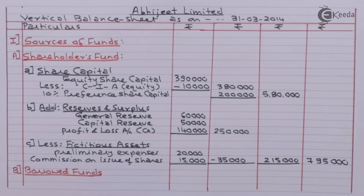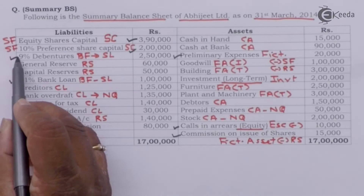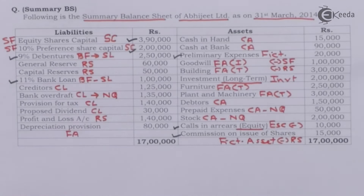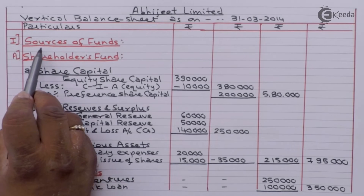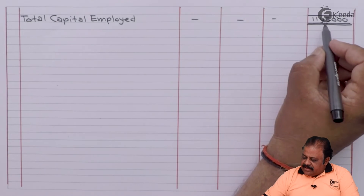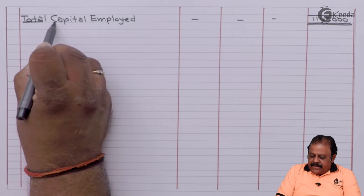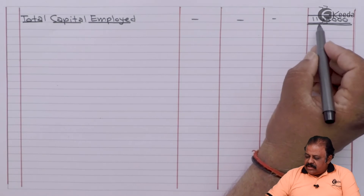Next we have borrowed funds or loan funds. We have 11% bank loan and 9% debentures as borrowed funds — both are secured loans. Total of these two loan funds comes to Rs. 3,50,000. Adding shareholders' fund and borrowed fund, total sources of funds is Rs. 11,45,000. This is the total capital employed or total funds employed in the business. The first part of the balance sheet is complete; the second part must also total Rs. 11,45,000.